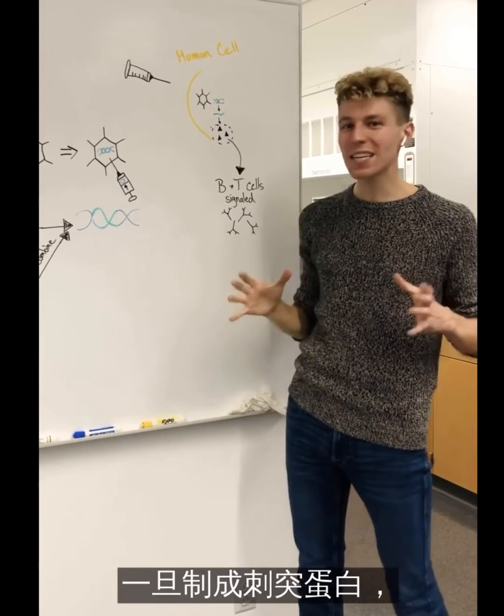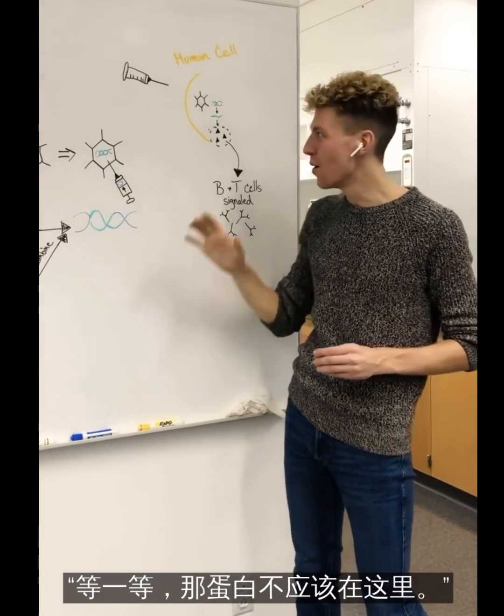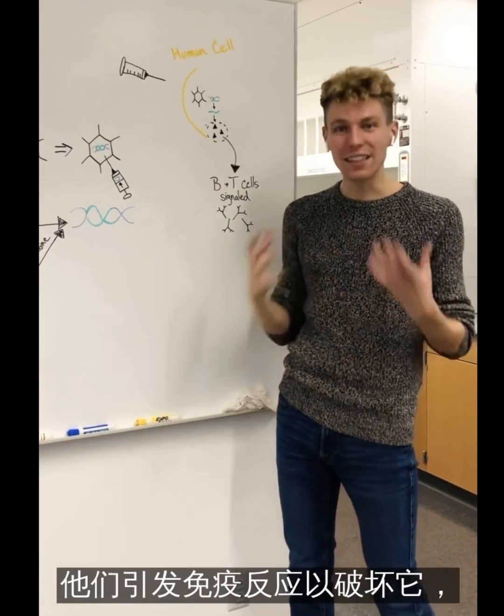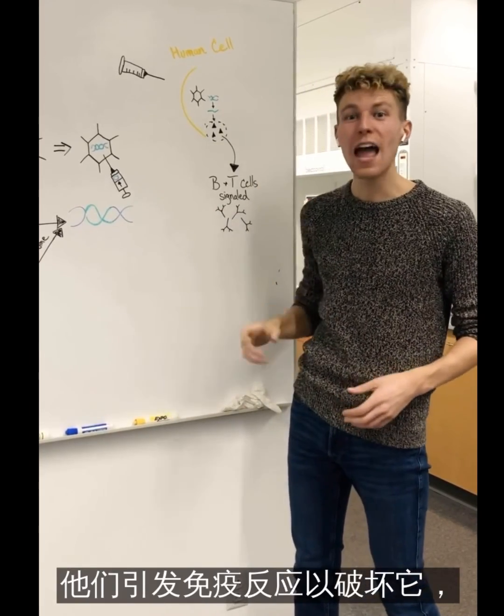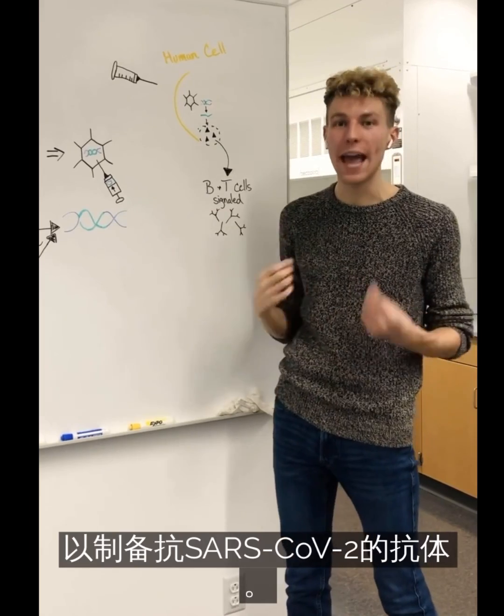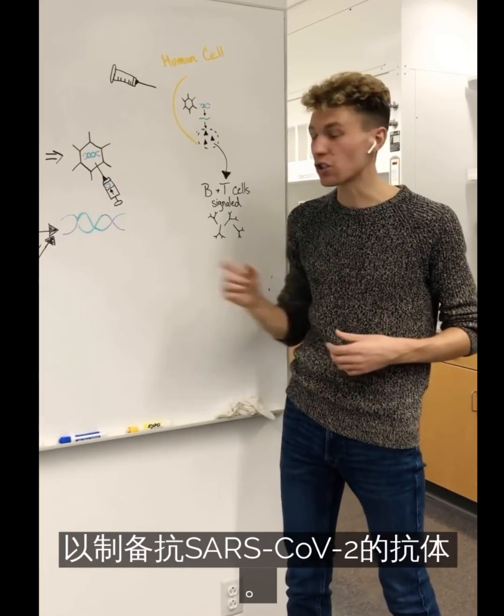As soon as that spike protein is made, that's when our bodies say, wait a second, that protein is not supposed to be here. They elicit an immune response to destroy it and then send that memory to our B and T cells in order to make antibodies against SARS-CoV-2.